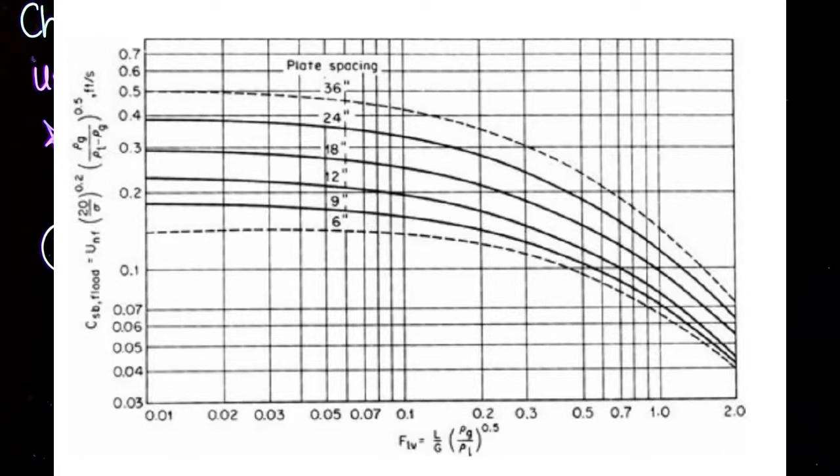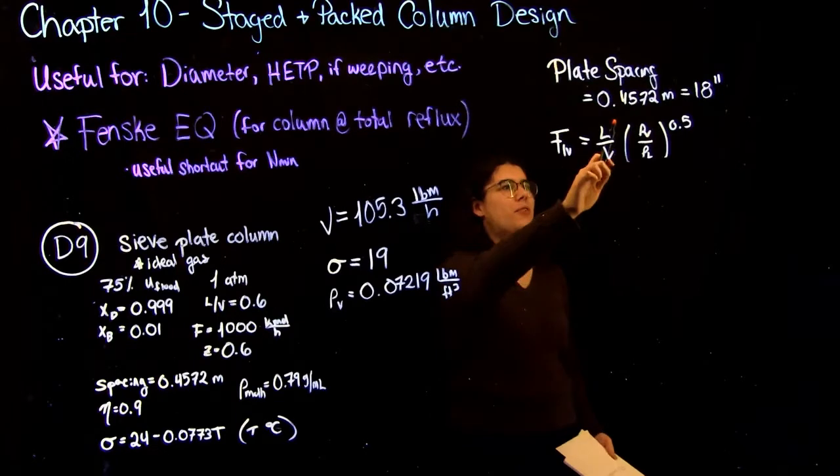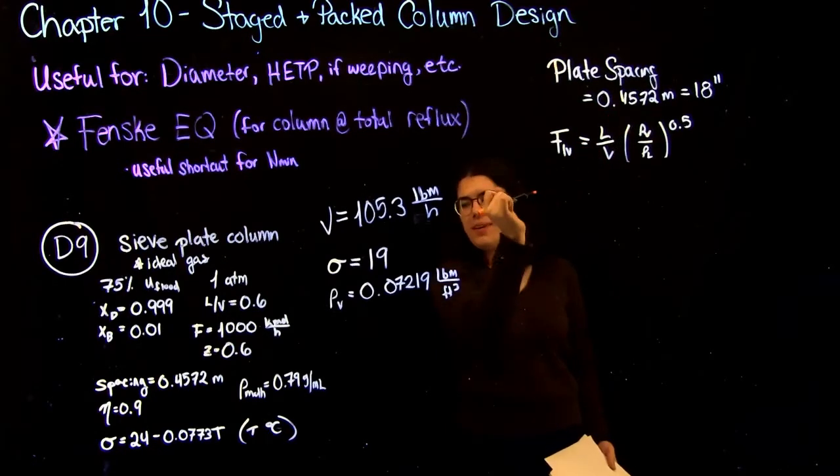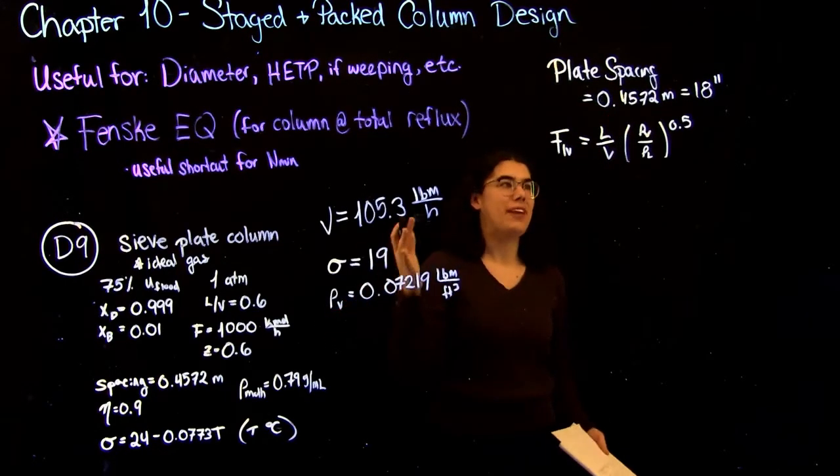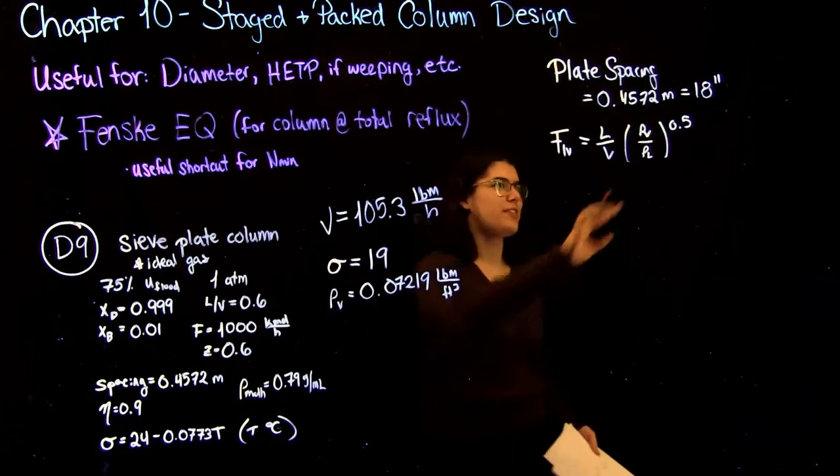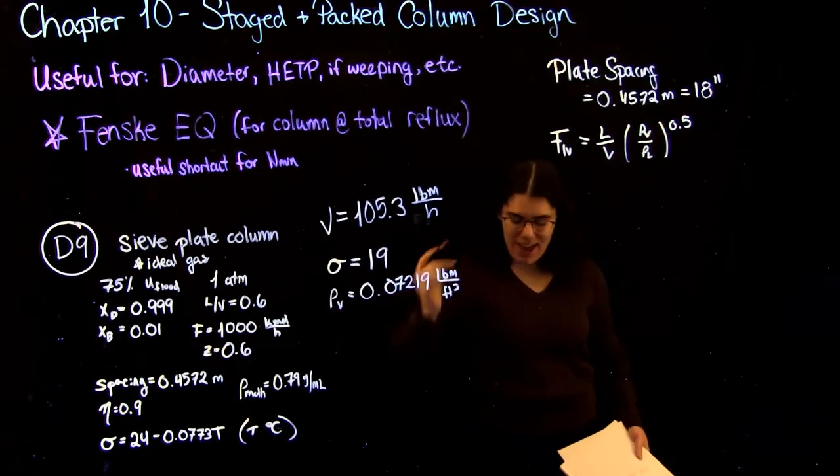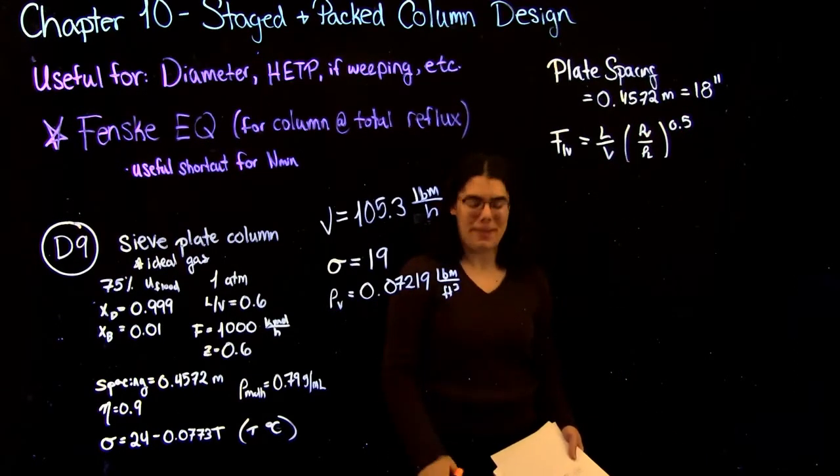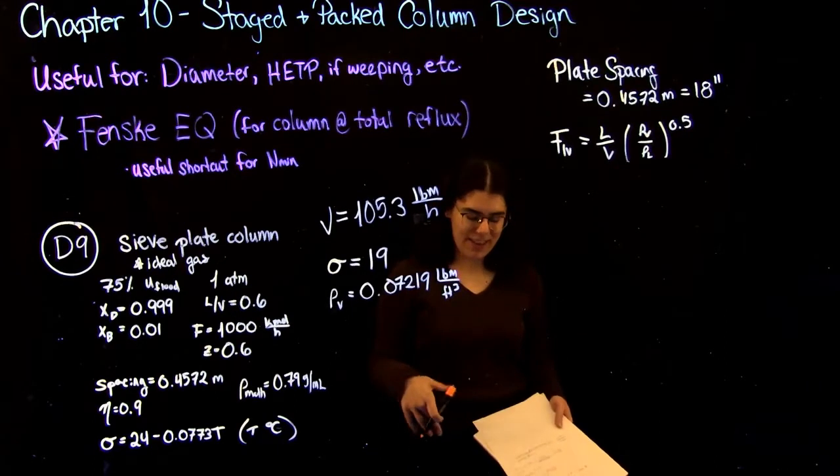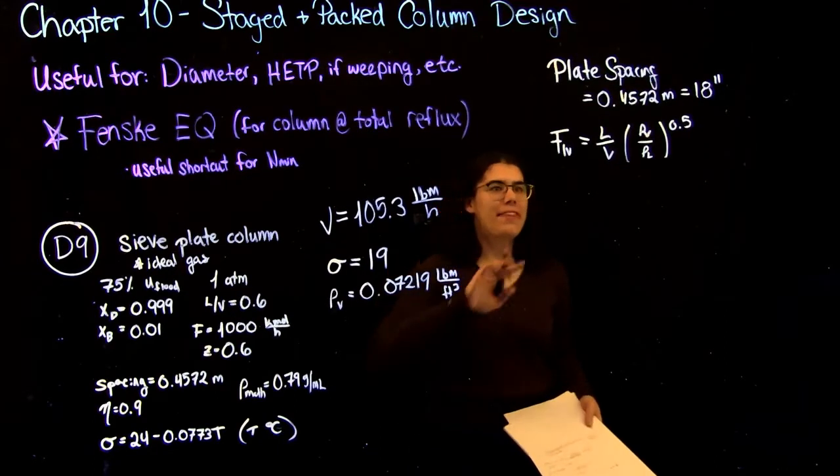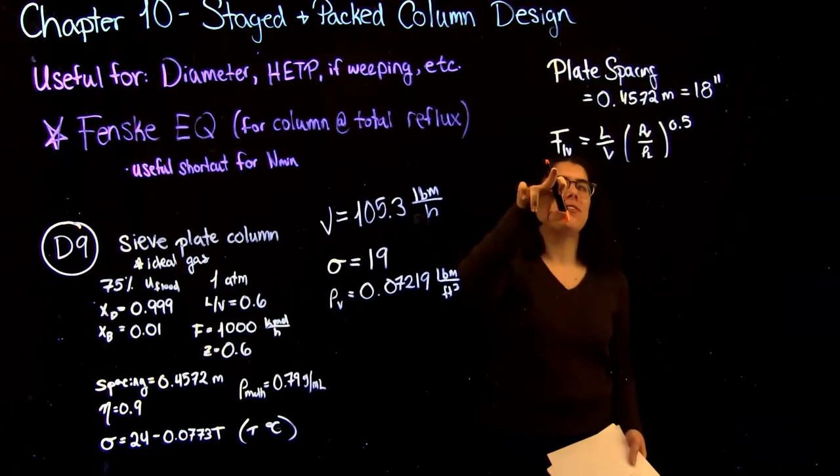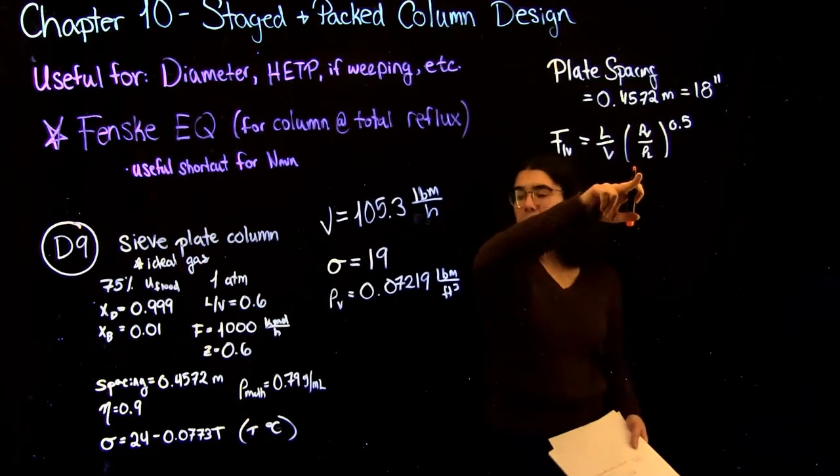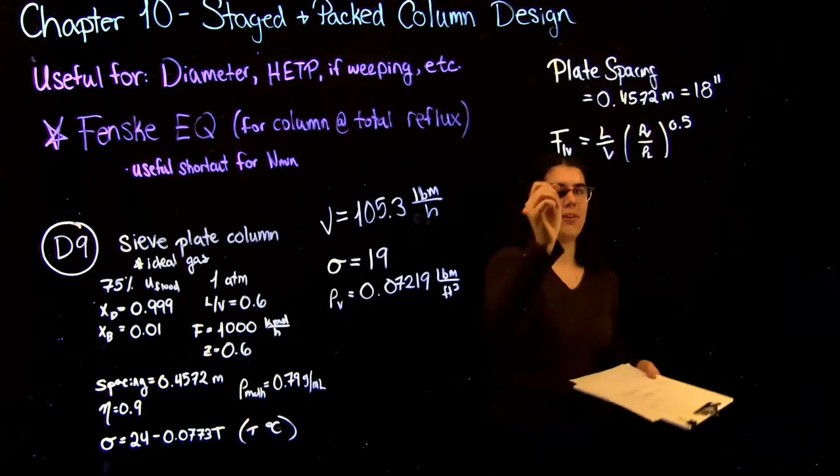So in order to be able to use this graph, we're going to need two things. So the first thing we're going to need is our plate spacing, so we know what line to use. So this is given in the question as 0.4572 meters. But like I said before, we need imperial units in order to use this graph. So that's just equal to 18 inches. And it's great, we're not going to have to interpolate because if you look on your graph, you'll see that that 18 inch line is right there. The other thing we need is we need to find our point on the x axis. So this is given by this equation.